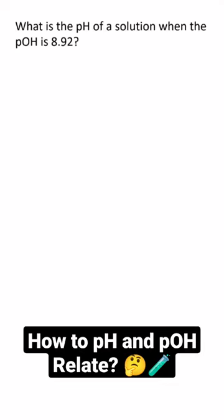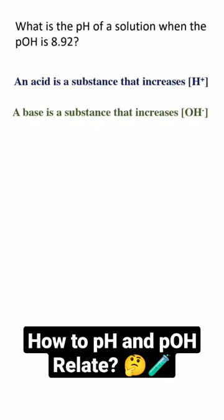Acids and bases are defined in a few different ways. In one definition, an acid is a substance that increases the hydrogen ion concentration in water, and a base is a substance that increases the hydroxide ion concentration.